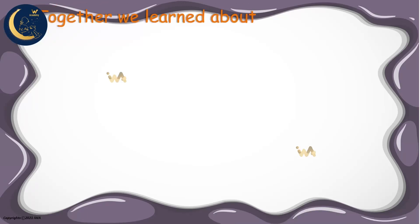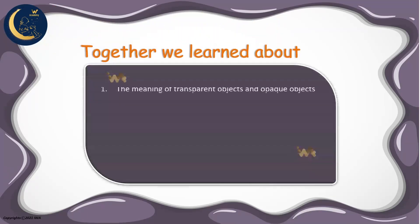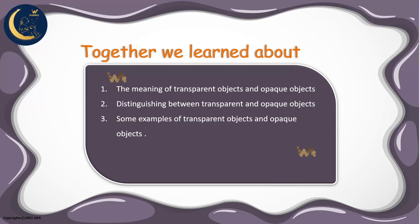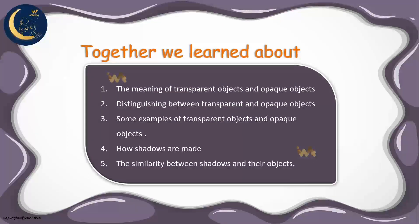Together, we learned about the meaning of transparent and opaque objects, and how to distinguish between them. We've also learned some examples of transparent and opaque objects. And finally, we've learned how shadows are made and the similarity between shadows and their objects.